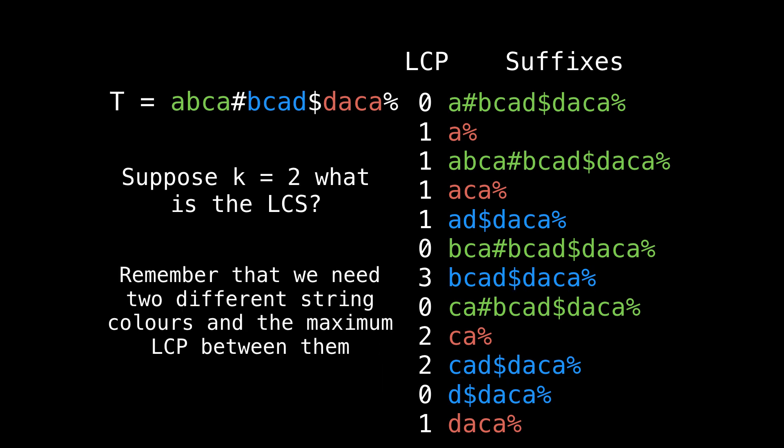Let's do another example. But this time, let's change the value of k to be equal to two. Since k equals two, we want to have two suffixes of different colors, and the maximum longest common prefix value between them.